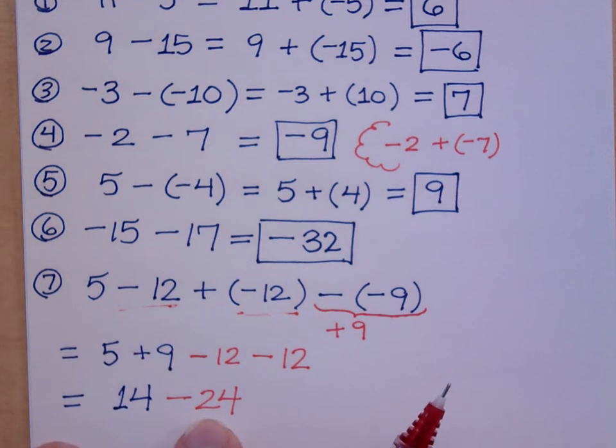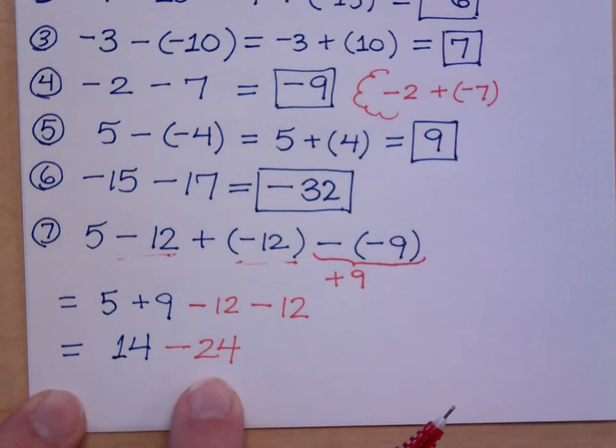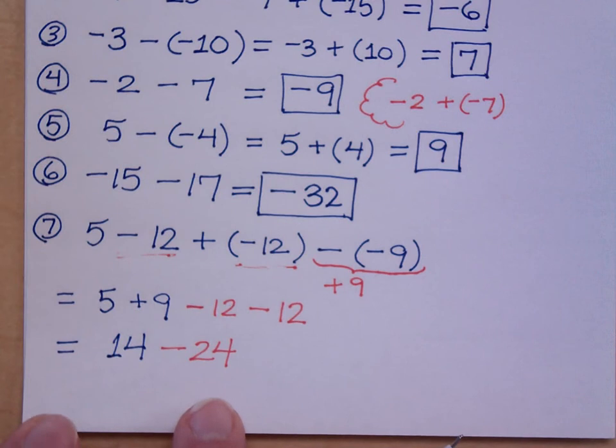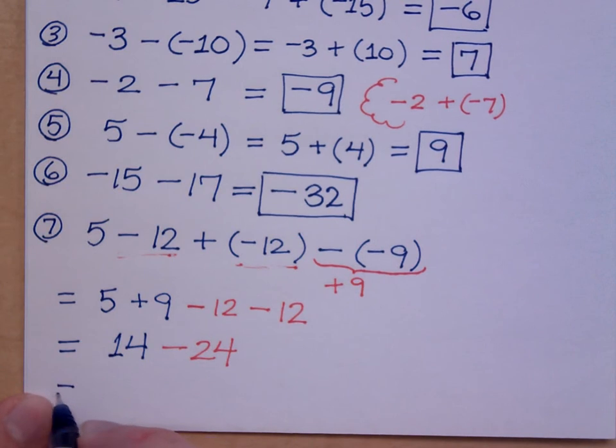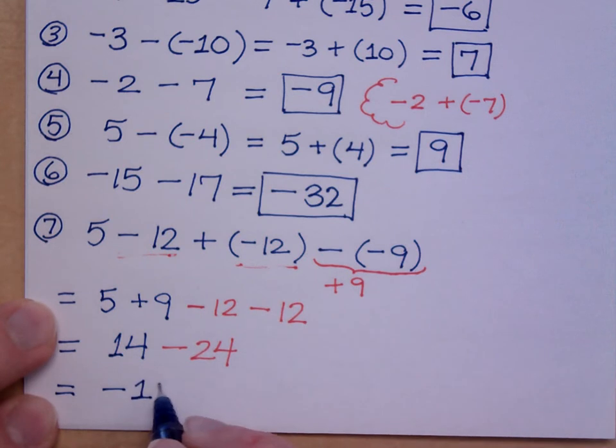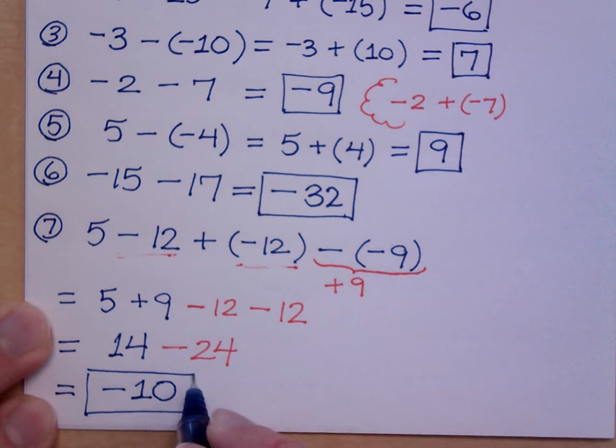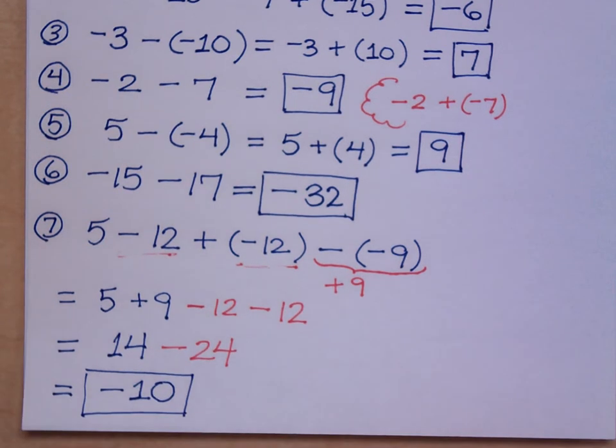So, I look here. I've got a 14 minus 24. But do you see how I've got the colors here? I think it kind of helps it stand out as you've got a positive 14 and a negative 24 that are being combined. Who has the larger absolute value, the positive or the negative? Negative. So, my answer must be negative. And what's the difference between 24 and 14? We have 10. The difference is 10. What questions do you have about that one?